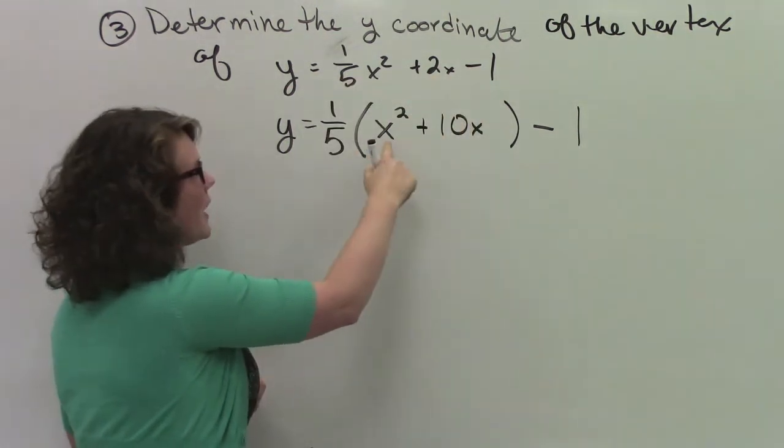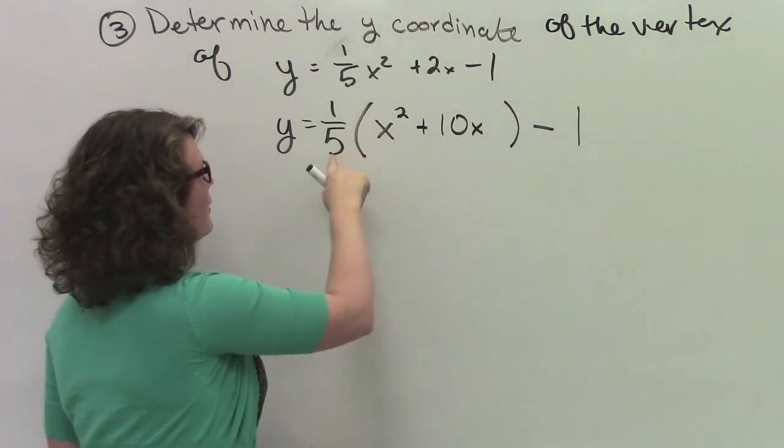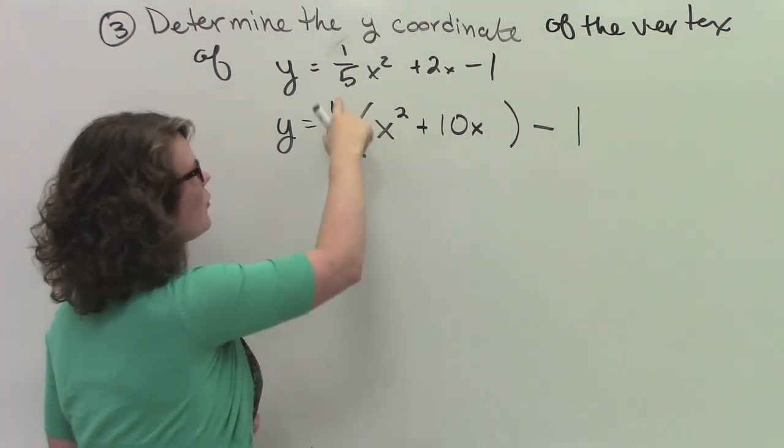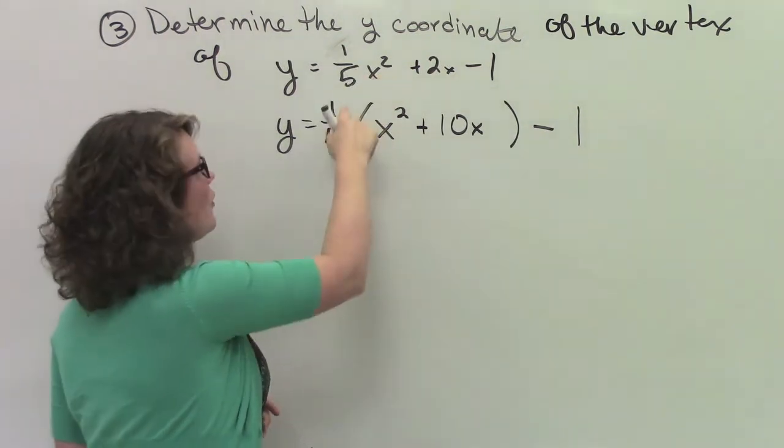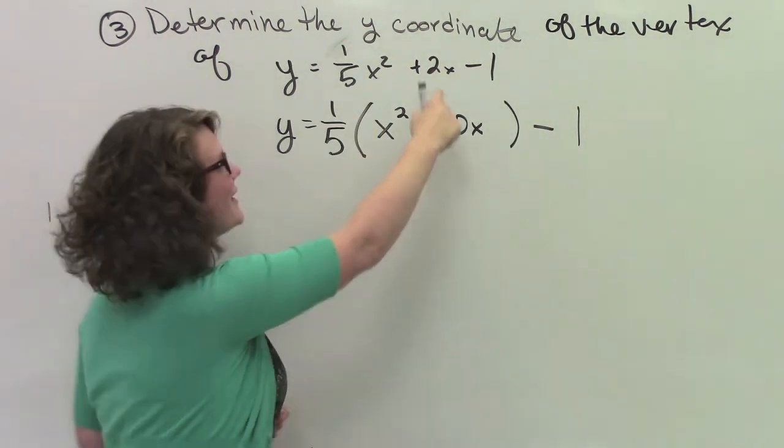1 fifth times x squared is 1 fifth x squared. 1 fifth times 10x is 2x.